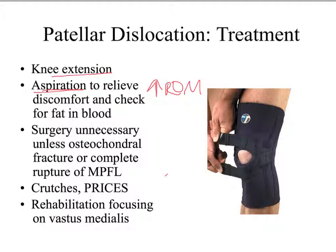Surgery for patellar dislocation is not recommended unless all of the medial restraints are torn, in which case the physician will repair the medial patellofemoral ligament, which provides about 60% of medial restraint. Normally treatment is conservative: locked in knee extension, crutches, protect it, rest it, ice it, compress and elevate. Once the patient has regained range of motion and is fully weight-bearing, the focus is on strengthening the dynamic restraints — specifically the vastus medialis and potentially the adductor muscle group.